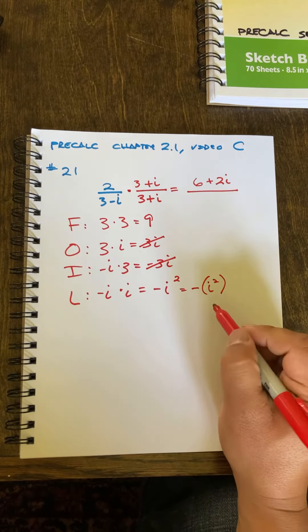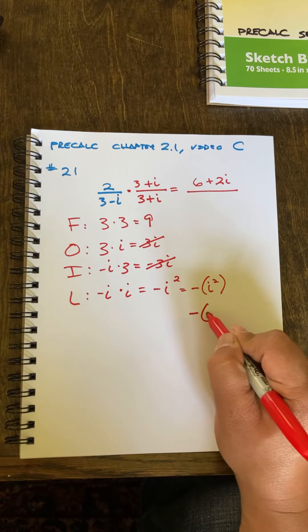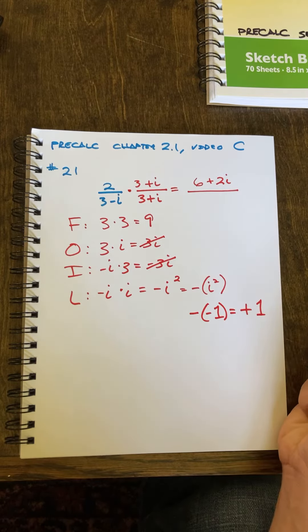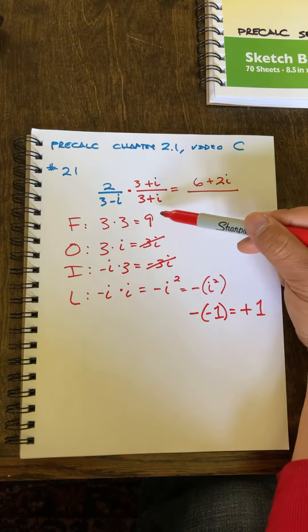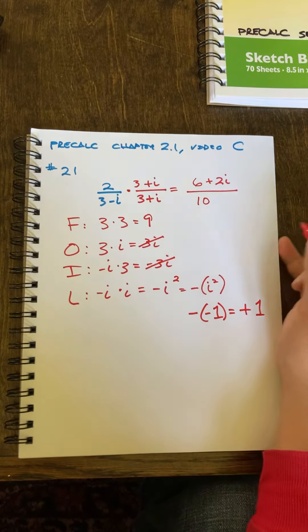i squared equals negative 1. So this is really negative 1, which is positive 1. I'm left with 9 plus 1 equals 10.